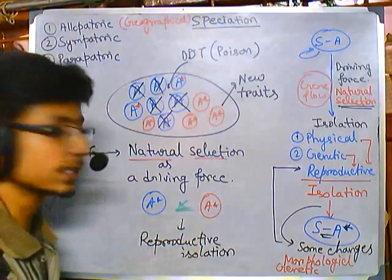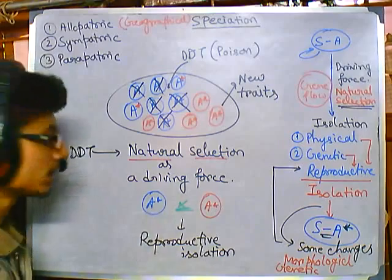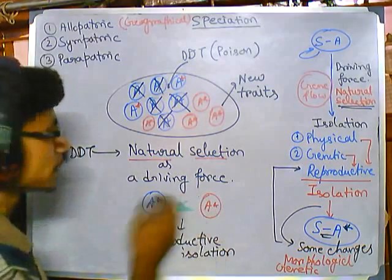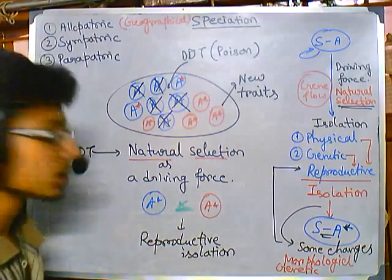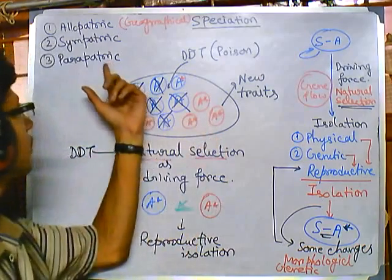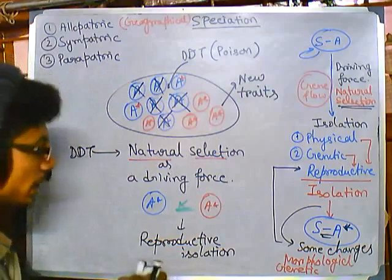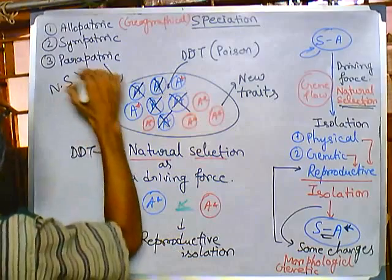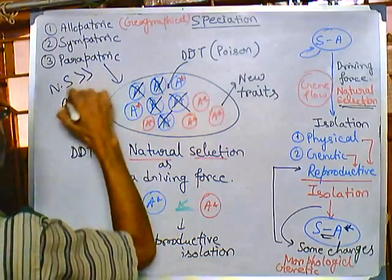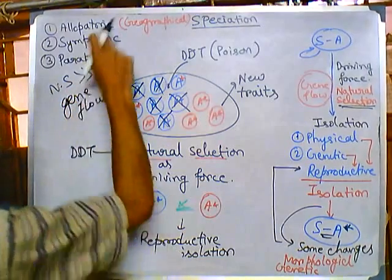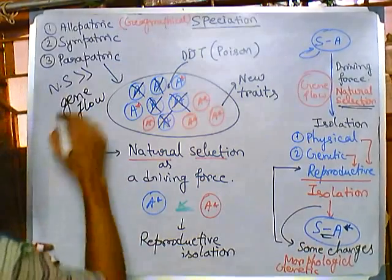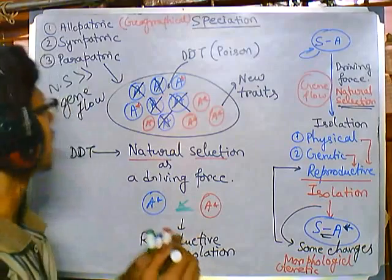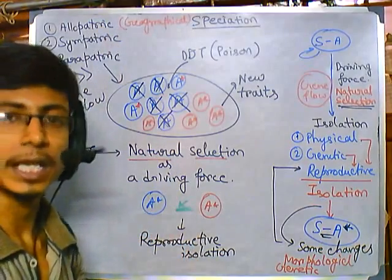This is how new species can arise. Since these two species are reproductively isolated and cannot reproduce between themselves, we say the new red-colored species is totally different from the blue-colored species. This is parapatric speciation, and here natural selection plays a more important role than gene flow, whereas in allopatric speciation gene flow plays the more important role.